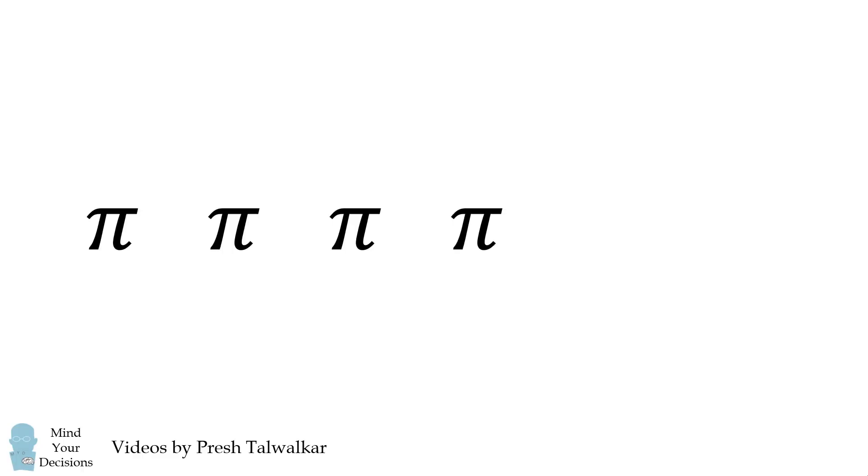Pi, pi, pi, pi. Write an equation that uses pi exactly four times and equals zero.